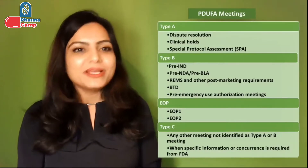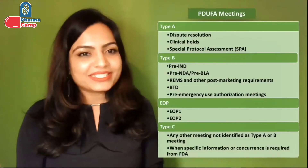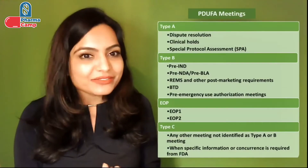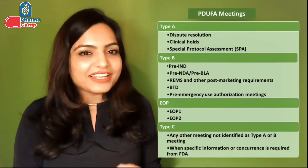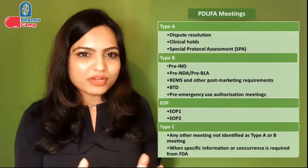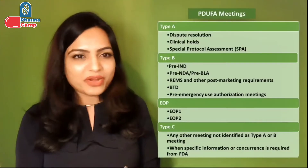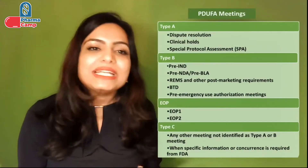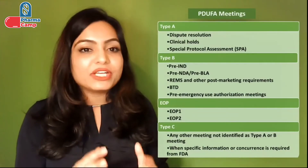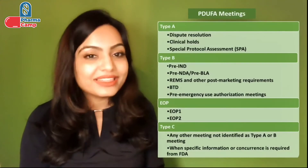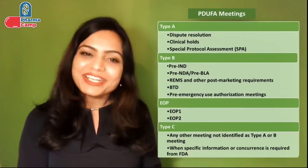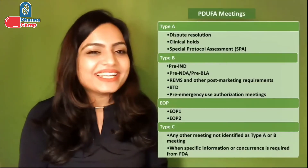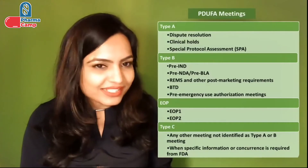Let's start with Type A meetings. In Type A meetings, you can discuss with FDA regarding any disputes that are not resolved and are still ongoing. So you can arrange a call or a meeting with FDA to discuss those disputes — this falls under Type A meetings.